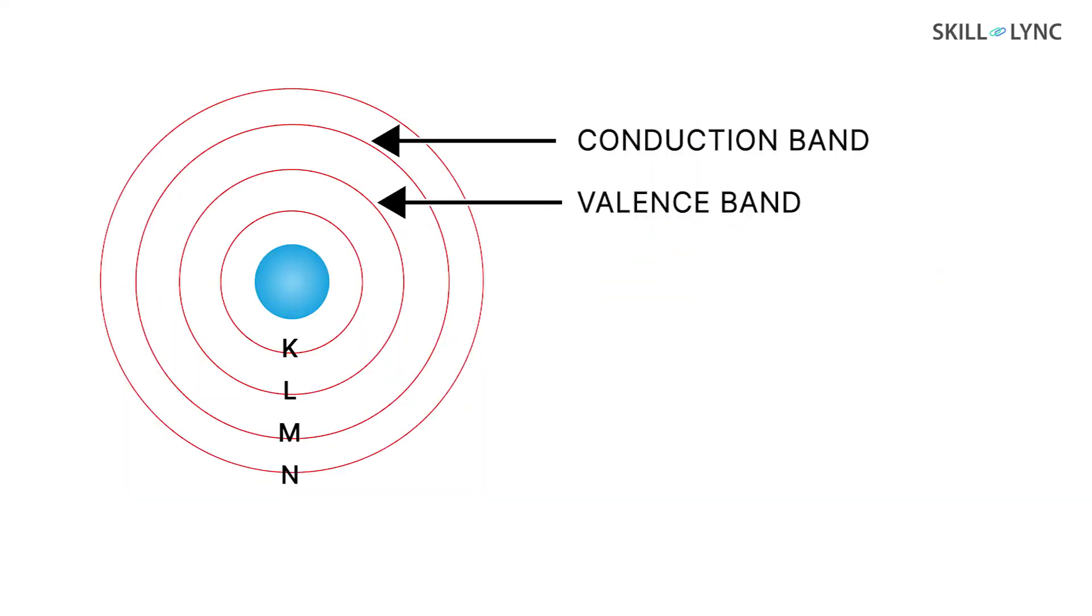The shell present just above the valence shell is called the conduction band. The conduction band holds the electrons when they are energized, thus making them conductive. The gap between the valence band and the conduction band is called the forbidden energy gap.